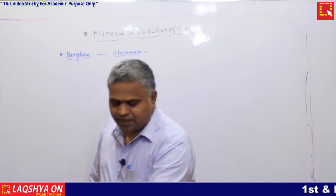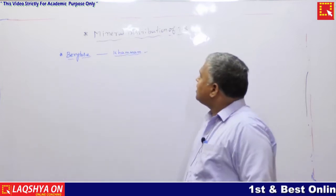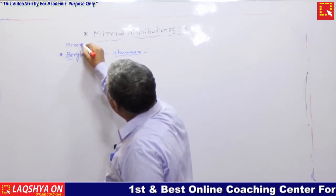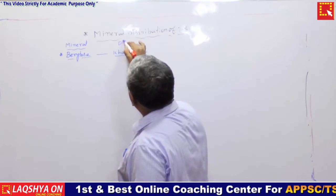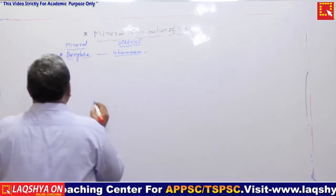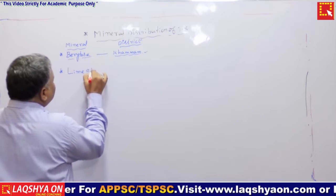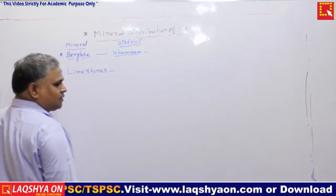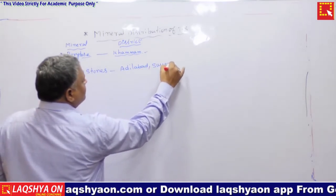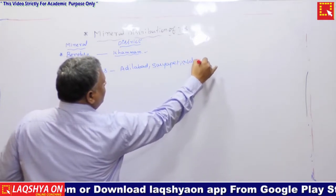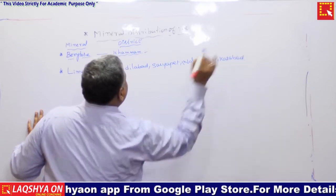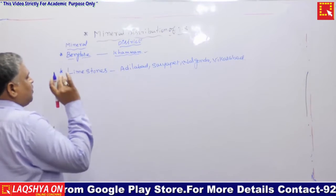Today we are discussing mineral distribution of Telangana state. The table has two columns: name of the mineral and name of the district. First, limestone deposits are found at Adilabad, Suryapet, Nalagonda, and Vikarabad districts.